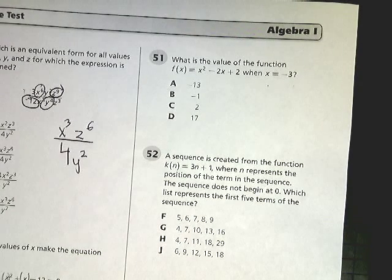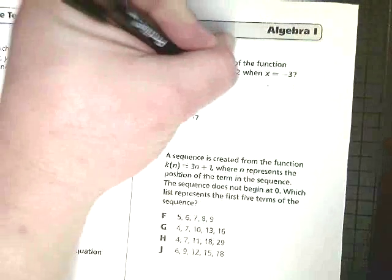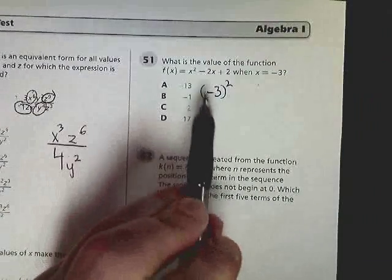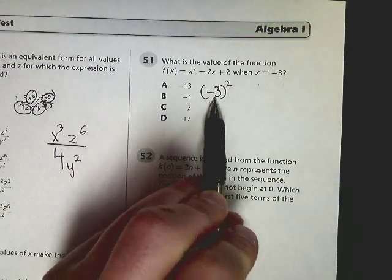Now to make sure that you do this correctly, you need to put that negative 3 in parentheses. Because in this case, now you have negative 3 times negative 3, which is positive 9.